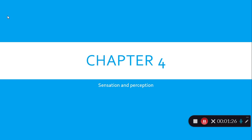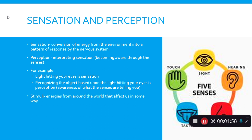Sensation and perception is really about how your mind senses the environment, is stimulated by the environment, and then how it perceives that information to make a big picture so you can make sense of it all. We'll look at the five senses, how the brain interprets them, and how it becomes aware of them. Sensation is converting energy from the environment into a pattern of response by the nervous system.